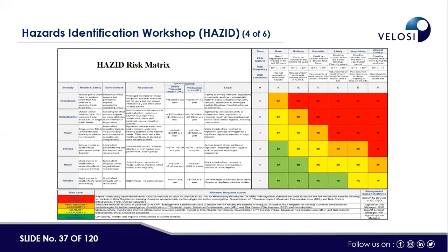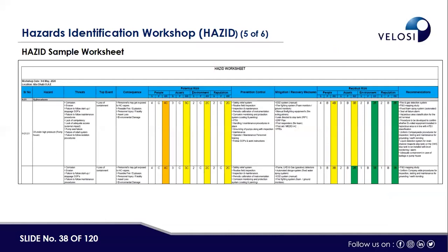The risk matrix we normally use starts with severity levels: notable, minor, serious, major, catastrophic, and disaster. The probability levels include: rare, unlikely, possible, likely, very likely, and almost certain. We assess both unmitigated and mitigated risk levels using this matrix. This is the sample worksheet used in the HAZID workshop. The first column identifies the hazard, followed by threats, top events, consequences, potential risk (unmitigated), and residual risk (after control measures).